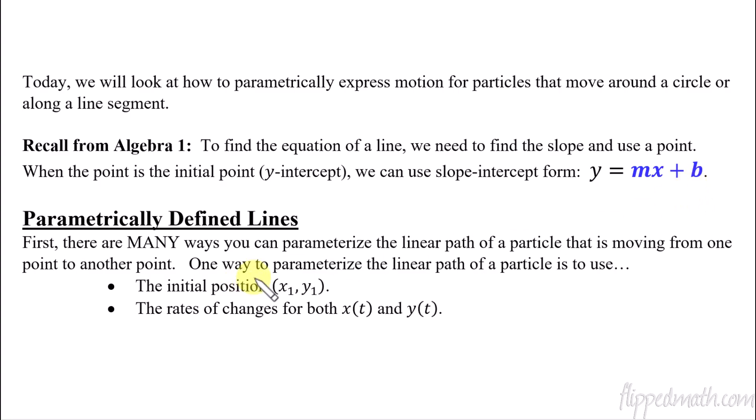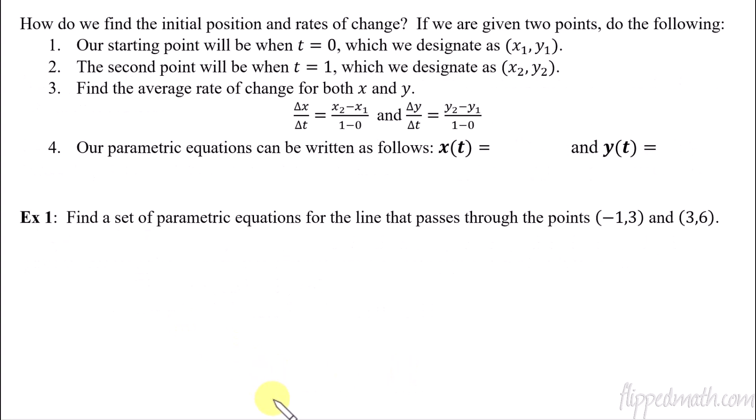So what we're going to do is something similar to that with parametric equations. How do we define lines? There's lots of ways to define lines parametrically. You could have lots of different equations that represent the same line. What we're going to do is one way in which we just start off with an initial position, we're going to call it (x₁, y₁). This is just some coordinate point on the line. If we have a coordinate point on the line, then we need the rates of change for the x component and then a rate of change for the y component. If we have those things, then we can create a parametrically defined function that represents a line.